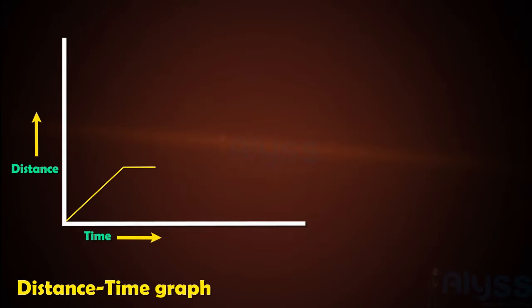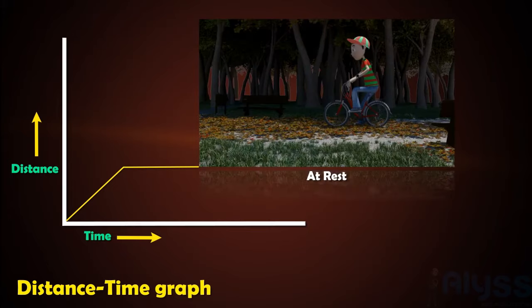If the graph is flat or horizontal line, it means the object is at rest.